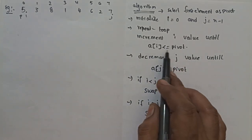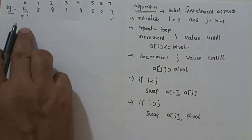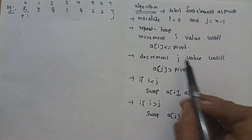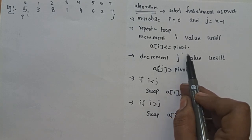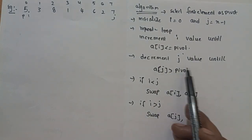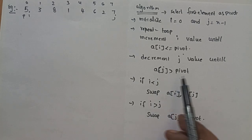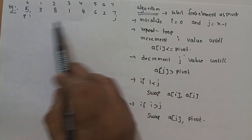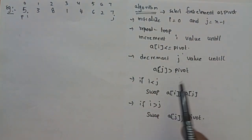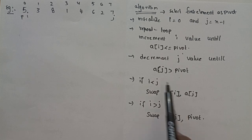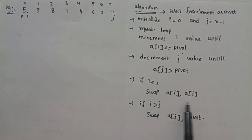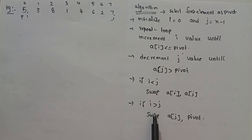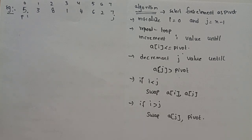Increment i value until a[i] is less than or equal to pivot. Decrement j value until a[j] is greater than pivot. If i is less than j, then swap a[i] and a[j]. Otherwise, if i is greater than or equal to j, swap a[j] and pivot.